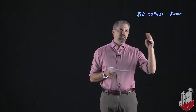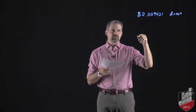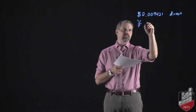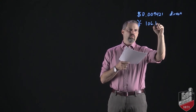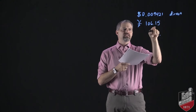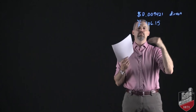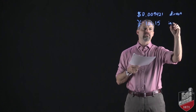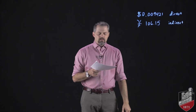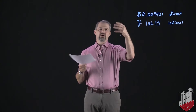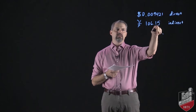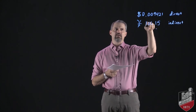We can also think about it in indirect terms: how many yen does it take to purchase one dollar? If we think about the number of yen to purchase one dollar, it would be 106.15 yen per dollar — the inverse. If we were thinking about it that way, we would be thinking about it in indirect terms. It would be the opposite in the other country — their direct terms would be yen per dollar, and their indirect terms would be dollars per yen.